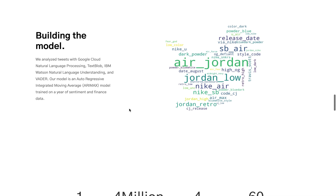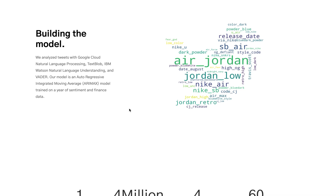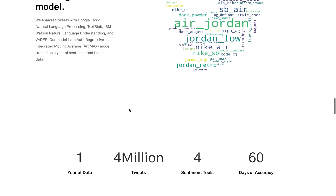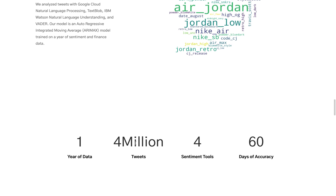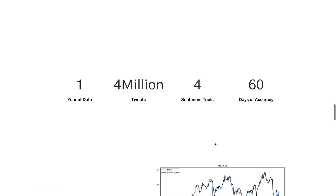Our model is an autoregressive integrated moving average, which took a year of data from Twitter and finance — over 4 million tweets — and we used a bunch of different sentiment analysis tools on the project to determine what would be the most accurate. Using this method, we were able to correctly predict trend and stock price over 60 days in advance.